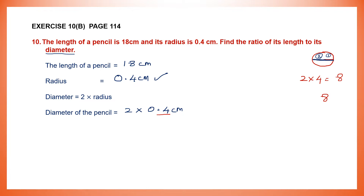8 is a whole number. For all whole numbers, it is understood that the point is after the number. Since I should have one decimal place, I'm going to move my point one place to the left, and my point comes here. There's no number before it, so I'm going to put 0. So what do I have? 0.8. So the diameter of the pencil is 0.8 cm.